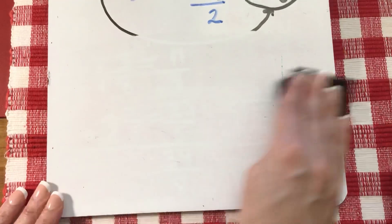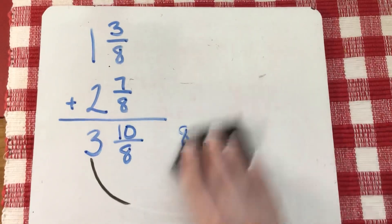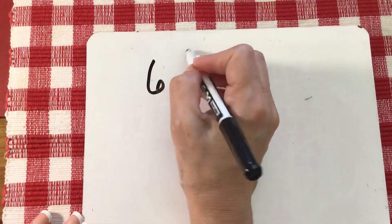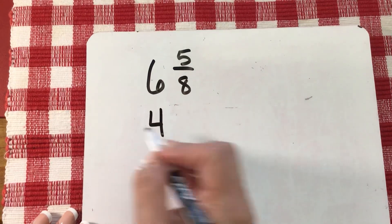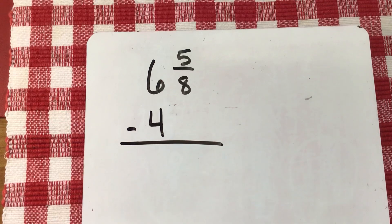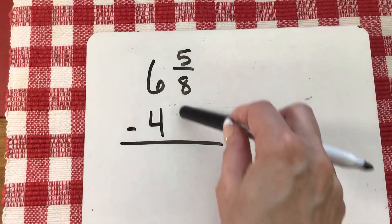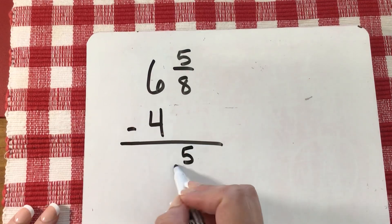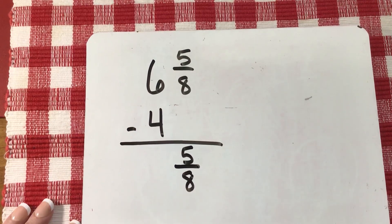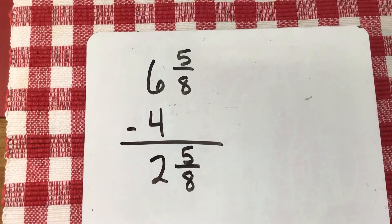Let's practice a few more and then I'll let you guys go on your Google Classroom. Let's try six and five eighths, and I'm going to subtract four. Don't overthink this guys. There is no fraction here, so that's almost like saying there's a zero there. So five eighths minus nothing is still five eighths, so nothing changes. Six take away four is two. That's it, you're done. That one was easy.